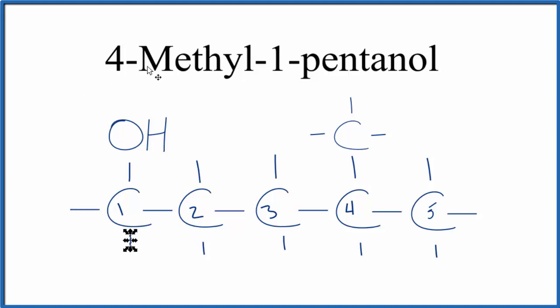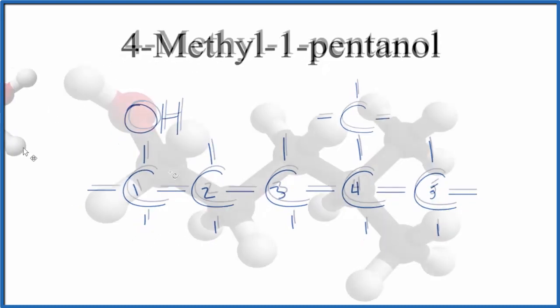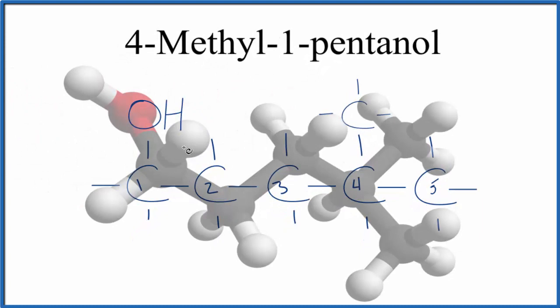Let's look at our molecular model of four methyl one pentanol. So here's the first carbon right here, the black or the gray. And here's the oxygen attached to a hydrogen here. So this is the alcohol group.